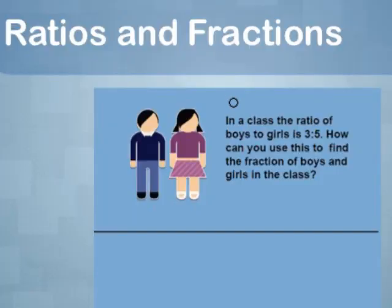In a class, the ratio of boys to girls is 3 to 5. How can you use this to find the fraction of boys and girls in the class? So we know the ratio of boys to girls is 3 to 5.